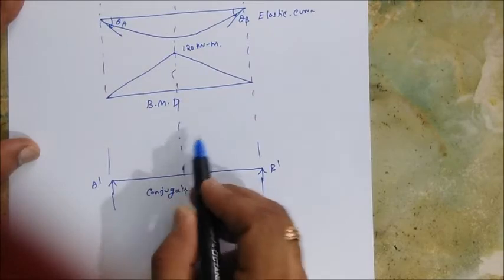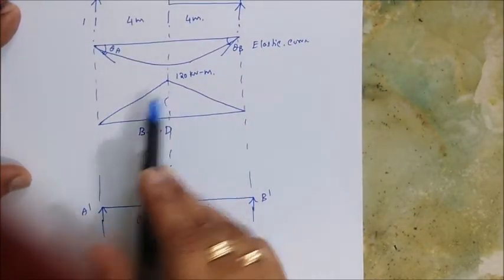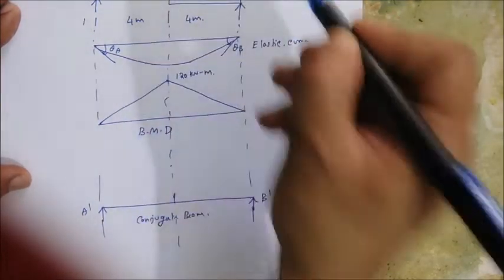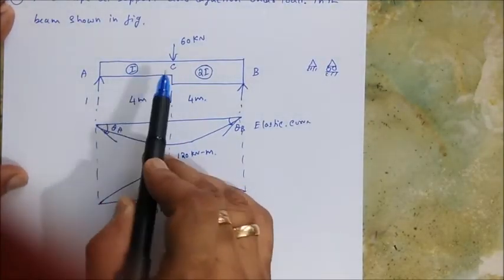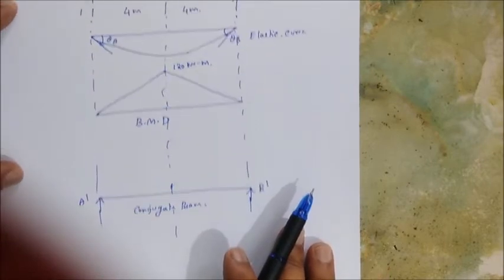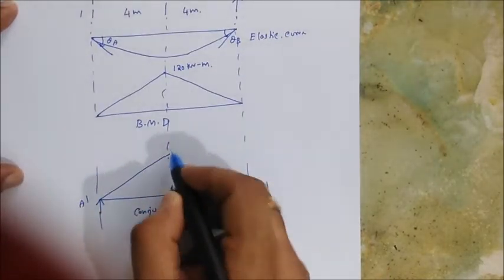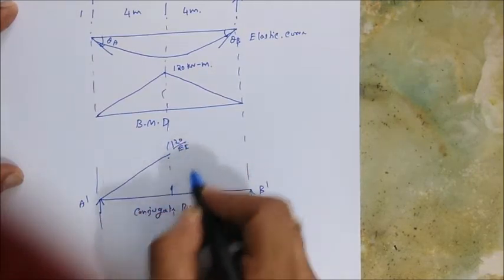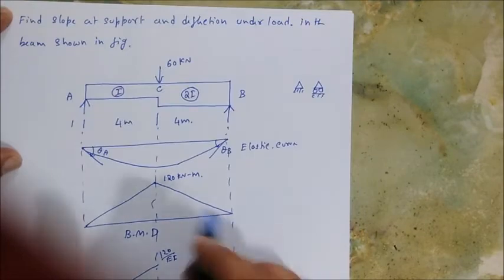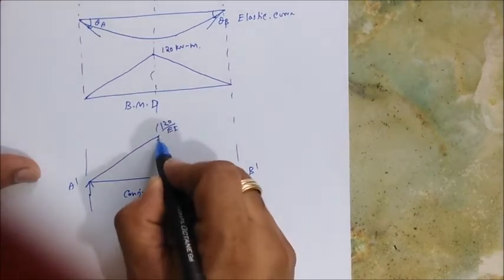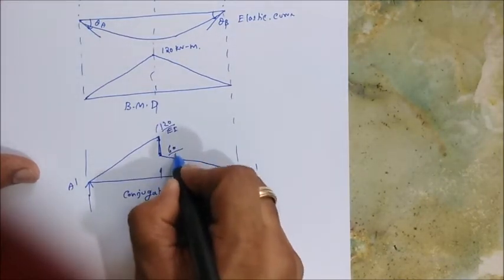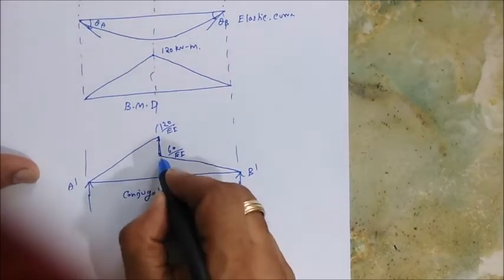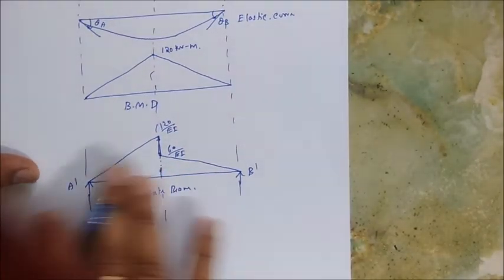At point C the moment is 120. In region AC, EI is unchanged, so the M by EI diagram value is 120 by EI — it remains the same. When it comes to region CB, the EI is 2EI, so you divide by 2, giving 60 by EI, and it goes linearly down. So we will have two regions accordingly.